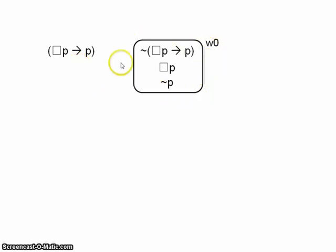This is very strange. We have necessarily p and not p. Our tree is still open, and this is invalid. That's quite odd, isn't it? Well, let's take another argument.